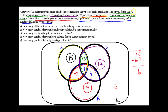Now let's use the Venn diagram to answer these questions. How many customers surveyed purchased only romance novels? Only romance novels would be in this region that contains 9. The 10, the 4, and 4 had other books they purchased as well. So just 9.